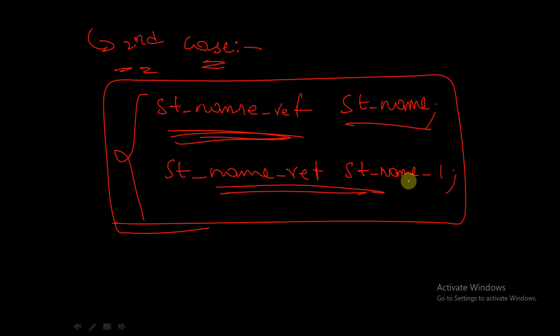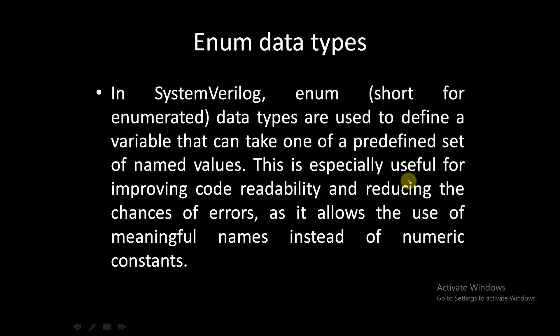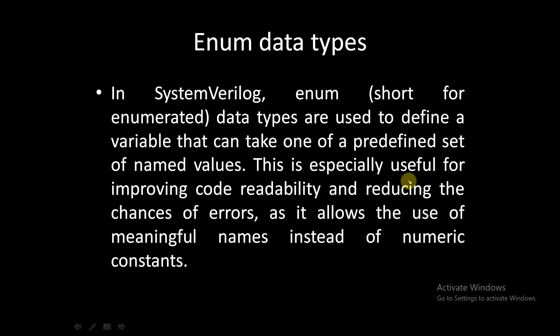To make the code shorter, simpler, and easier — I hope this example is clear. If you have any doubts you can ask. Now let's start with enum data types. In SystemVerilog, enum — short for enumerated data types — is used to define a variable that can take one of a predefined set of named values.